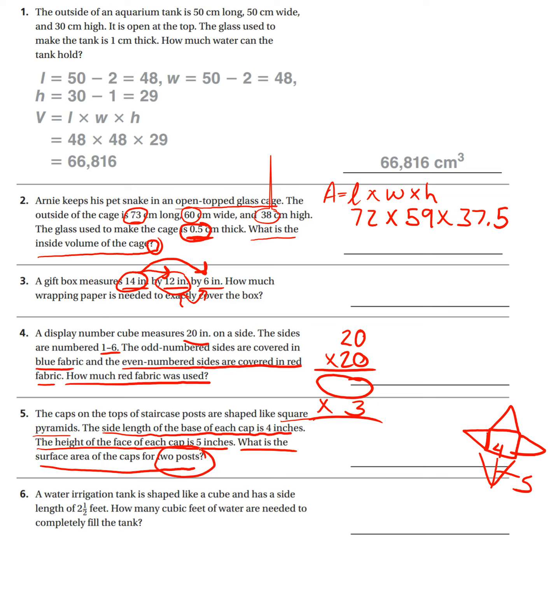What is the surface area of the caps for two posts? The caps on the tops of staircase posts. Okay, so I'm guessing we have to find, what is the surface area for the caps of two posts? Caps on the tops of the staircase posts are shaped like square pyramids. Okay, I see. So at the end of the staircase they have posts that look like this. But there's two of them. What is the surface area of the caps? So I'm wondering if they include the bottom or not. Well, let's check it out and find out.